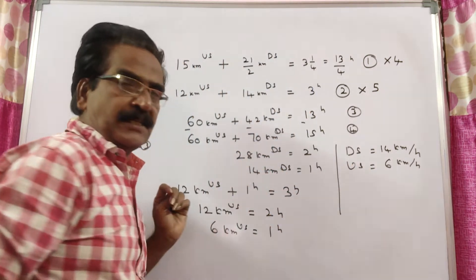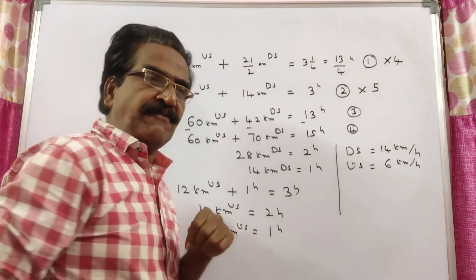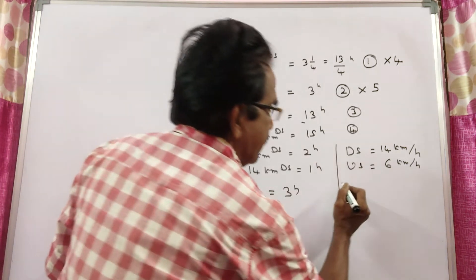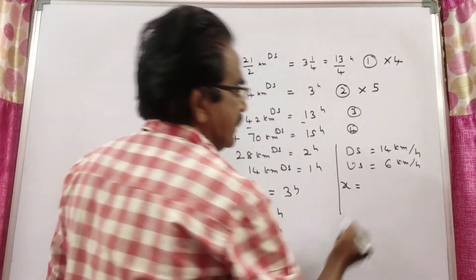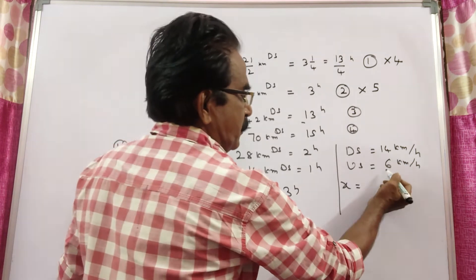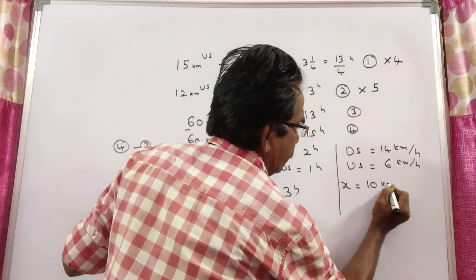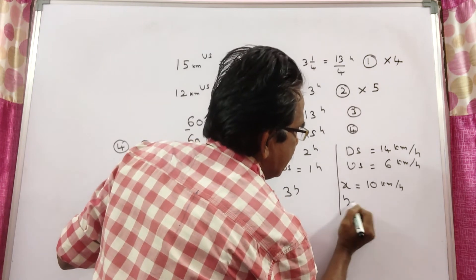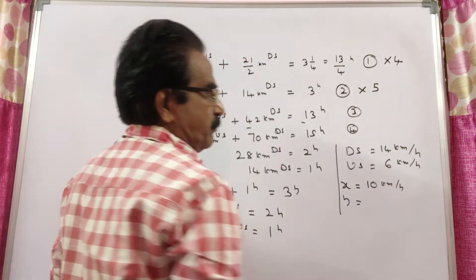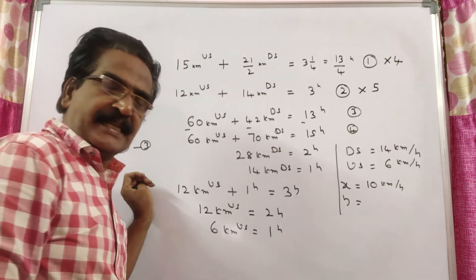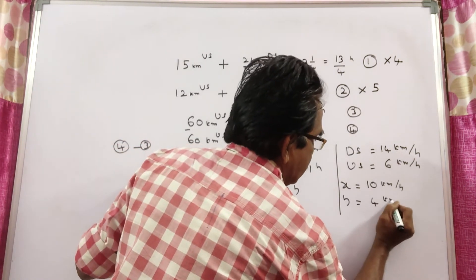Now, you know DS, you know US and you can find both x and y. x that is boat velocity, DS plus US by 2, 14 plus 6, 20 by 2, 10 kmph. And stream velocity DS minus US by 2, 14 minus 6, 8, 8 by 2, 4 kmph.